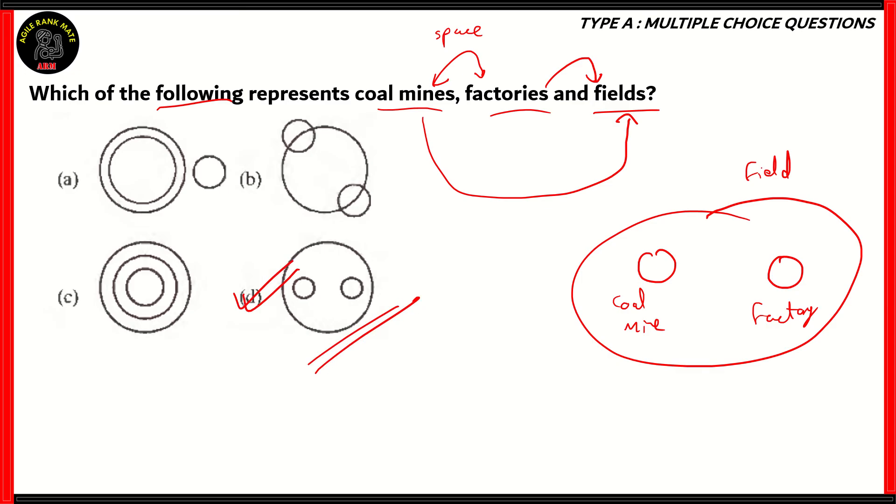In option A, one of the three words is completely excluded from the other, so that's incorrect. In option B, it says some coal mines and some factories are not in fields, which is also incorrect. Option C is concentric, meaning one is smaller than the other, so that's also incorrect. The right answer is option D. Coal mines and factories are both present in fields.